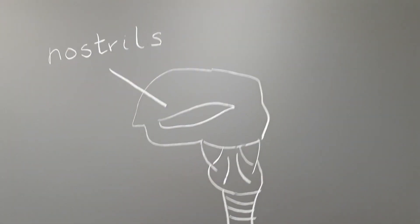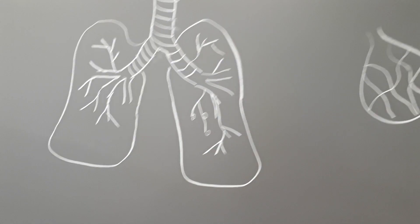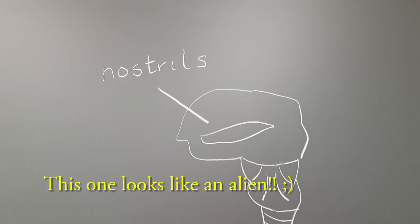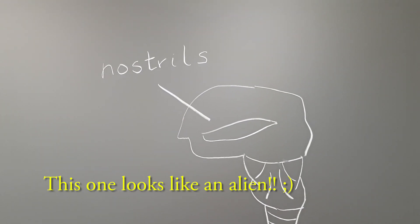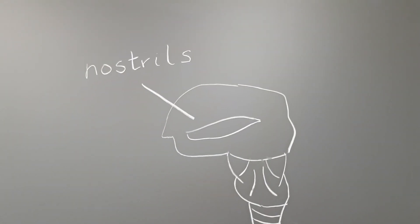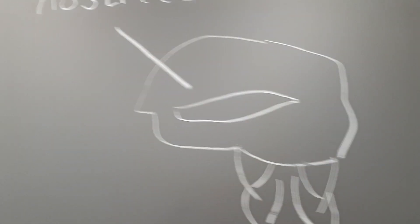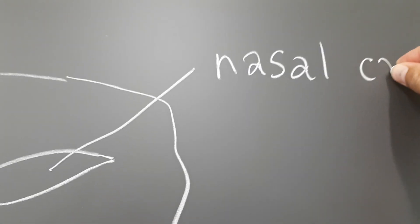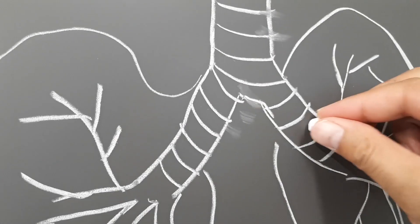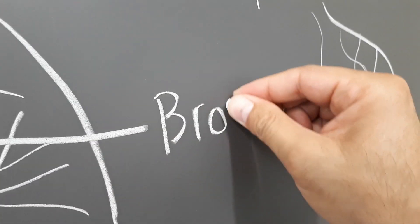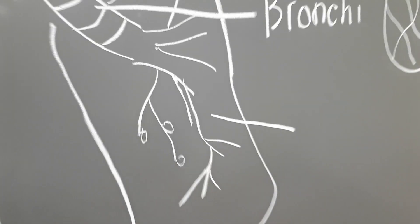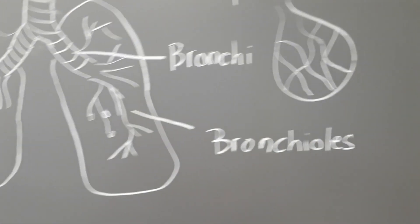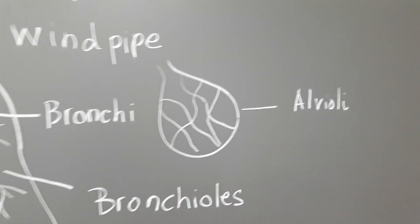Here we have another picture — a bit funny picture — of the respiratory system, but hopefully you can understand more or less how it works. Here that would be our mouth and here are the nostrils. We should breathe through the nostrils because it's better because it filters the air. Here we have the nasal cavity. These two parts are called the bronchi. These ramifications or smaller divisions would be called the bronchioles. In the end of the bronchioles, we'll find the alveoli, where the gas exchange takes place.